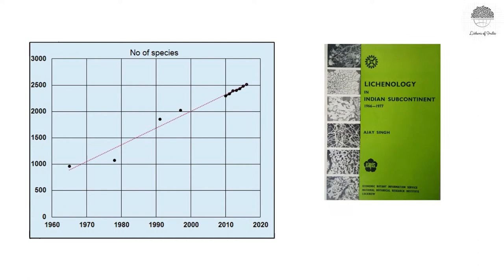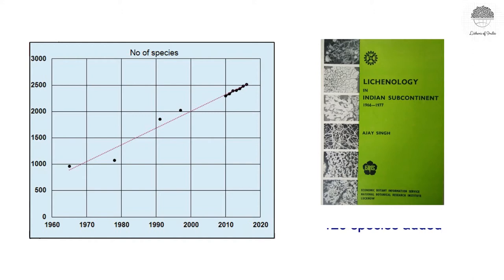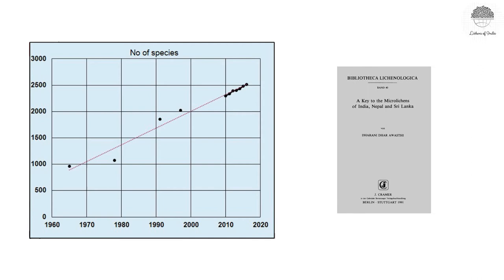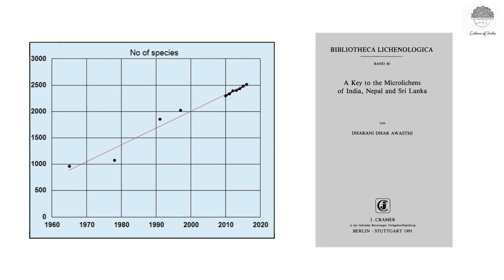Thereafter, Ajay Singh in 1980 compiled the progress in lichen research for 20 years after 1965, and he listed about 120 additional species beyond those in Avasti's catalogue. Then another milestone: in 1991, Avasti produced two checklists — keys for the macro lichens from the Indian subcontinent and micro lichens from the Indian subcontinent. Combining these two, it produced about 1850 species.